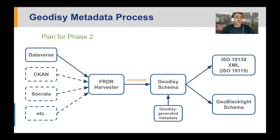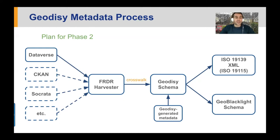In phase two, which we are working on right now and should be ready in early spring, we are adding multiple other repositories into Geodesy's pipeline. We are doing so by harvesting the metadata into an FRDR harvester and doing a crosswalk from there. This way, we do not have to develop crosswalks from each native repository such as CKAN or Dataverse — we just use the FRDR harvester as our metadata source.